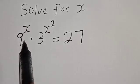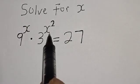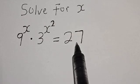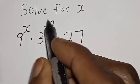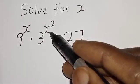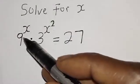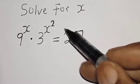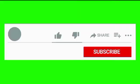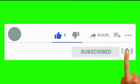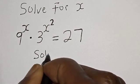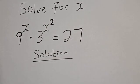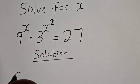Solve for x: 9 raised to power s multiplied by 3 raised to power s squared is equal to 27. Hi everyone, welcome to my class. In today's class we want to find the value of s from this given equation: 9 raised to power s multiplied by 3 raised to power s squared is equal to 27. Before we proceed, please don't forget to like, share, comment and subscribe.